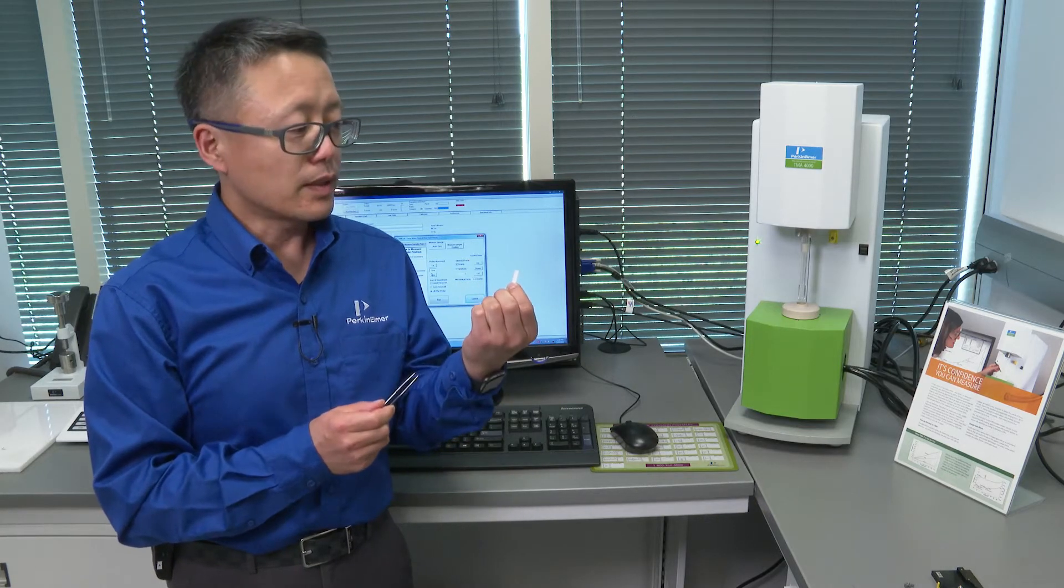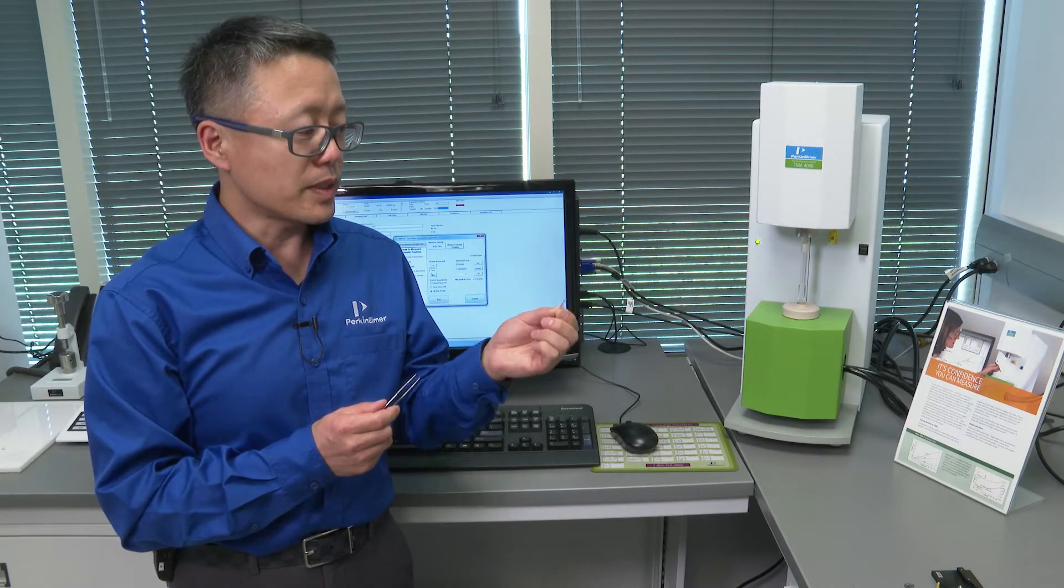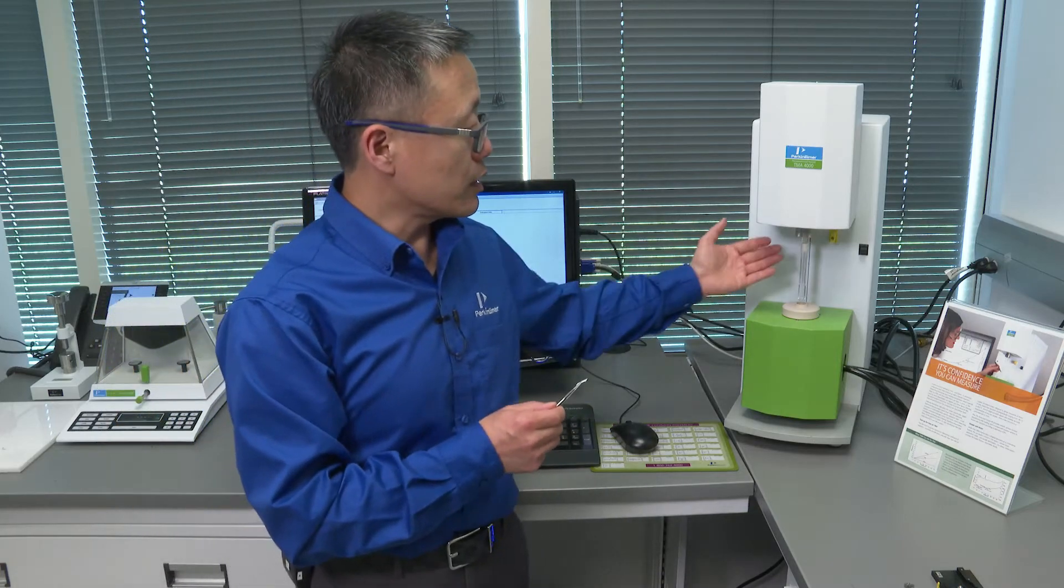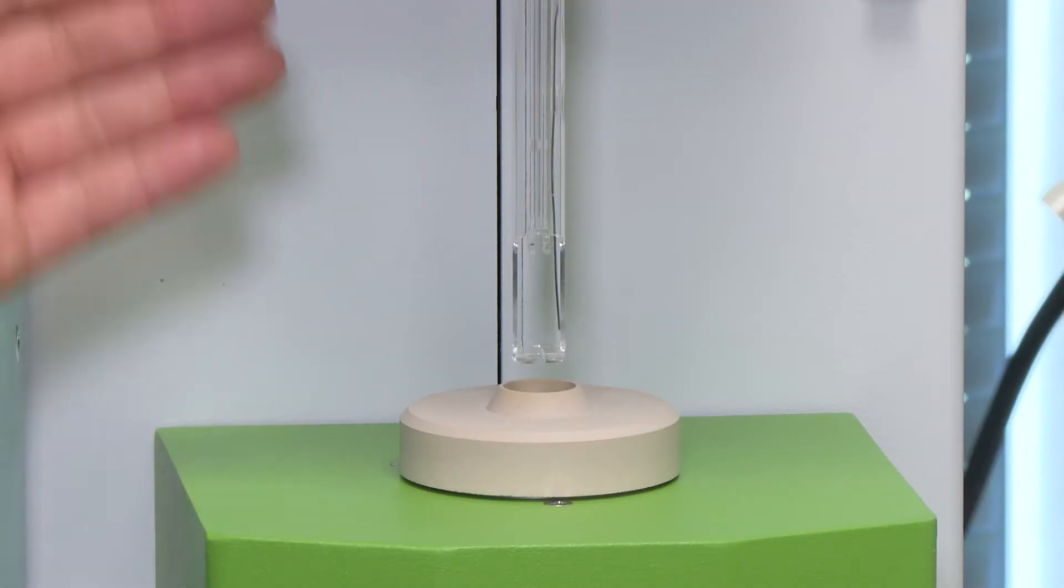This is an example of what a film sample looks like. I have changed the fixture to a tension fixture.